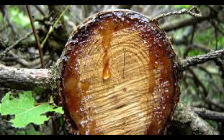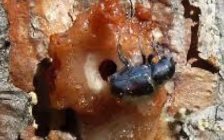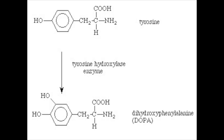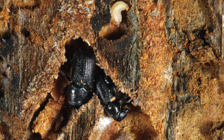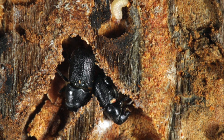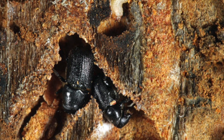Trees contain monoterpenes, also known as sap, which is toxic to animals and is used to protect itself from predators. The female mountain beetles metabolize pine trees by detoxifying the sap. The beetle uses hydroxylation, which adds a hydroxyl group by replacing a hydrogen atom. The hydroxylation occurs on the allelic methyl groups inside the sap, which detoxifies it. This detoxifying process attracts male pine beetles, causing more beetles to come to the tree and attack.